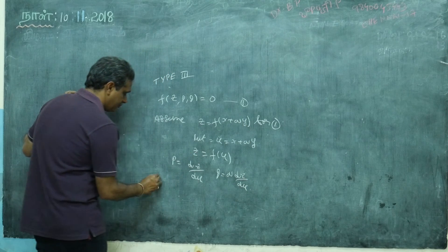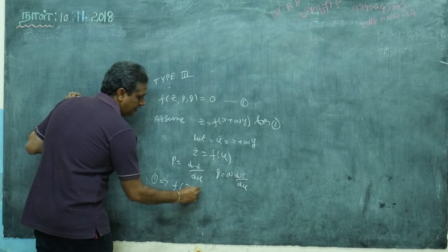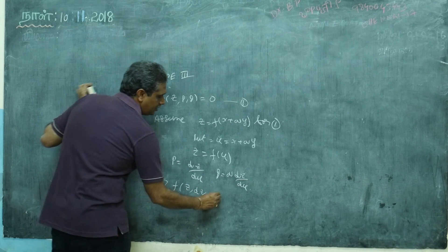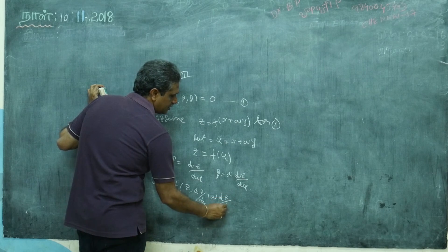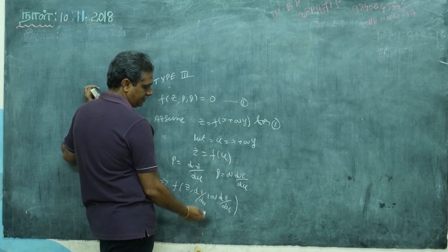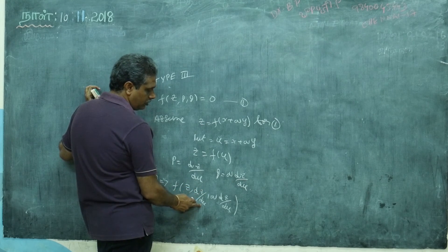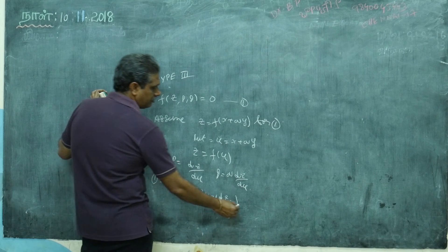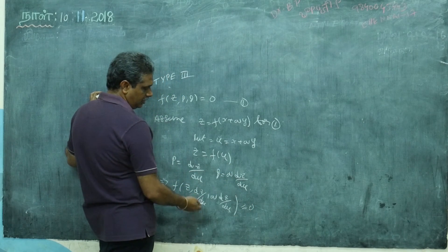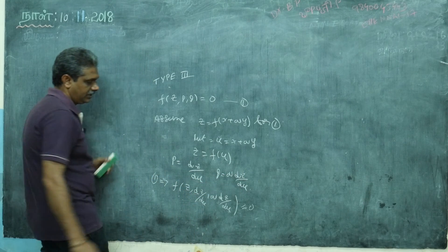So the equation becomes a function of z, dz/du, and a·dz/du. The whole partial differential equation becomes an ordinary differential equation in terms of z and u alone. Then we can use the separation of variables method: bring all z functions to one side, du to the other side, then integrate both sides to get the complete integral.